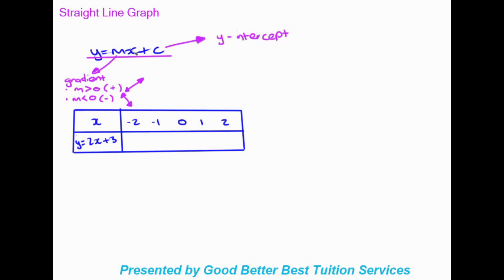So x and y in the equation are just your x and y values on the graph, and we're going to work those out using the table. The equation given is y equals 2x plus 3, which fits the form of a straight line graph equation. This equation will help us turn our x values into y values, because to plot a graph we need both an x and a y value. So we'll substitute x into the equation.